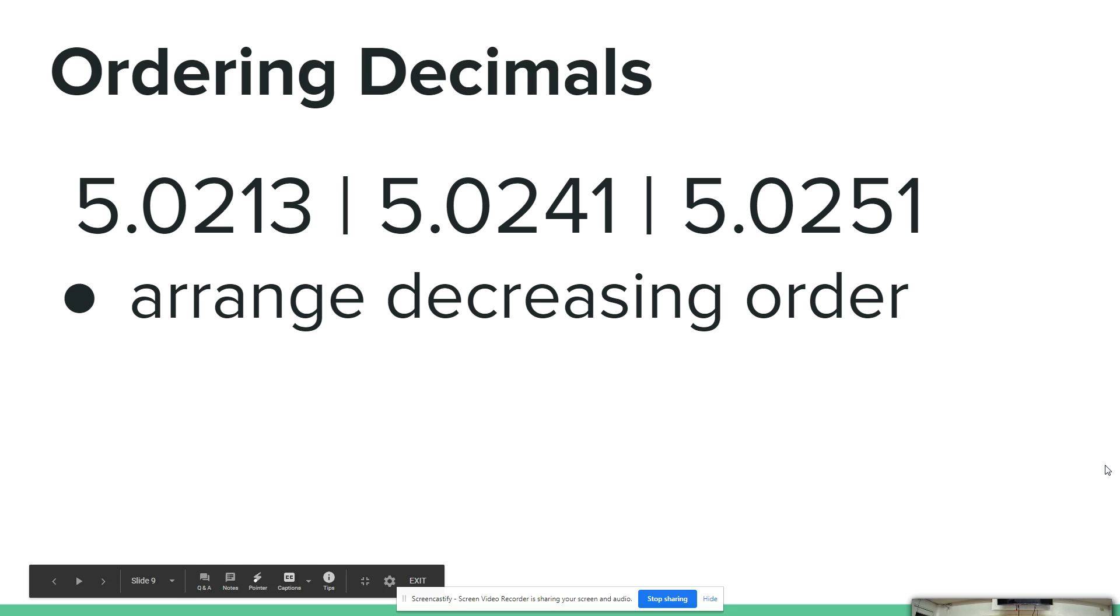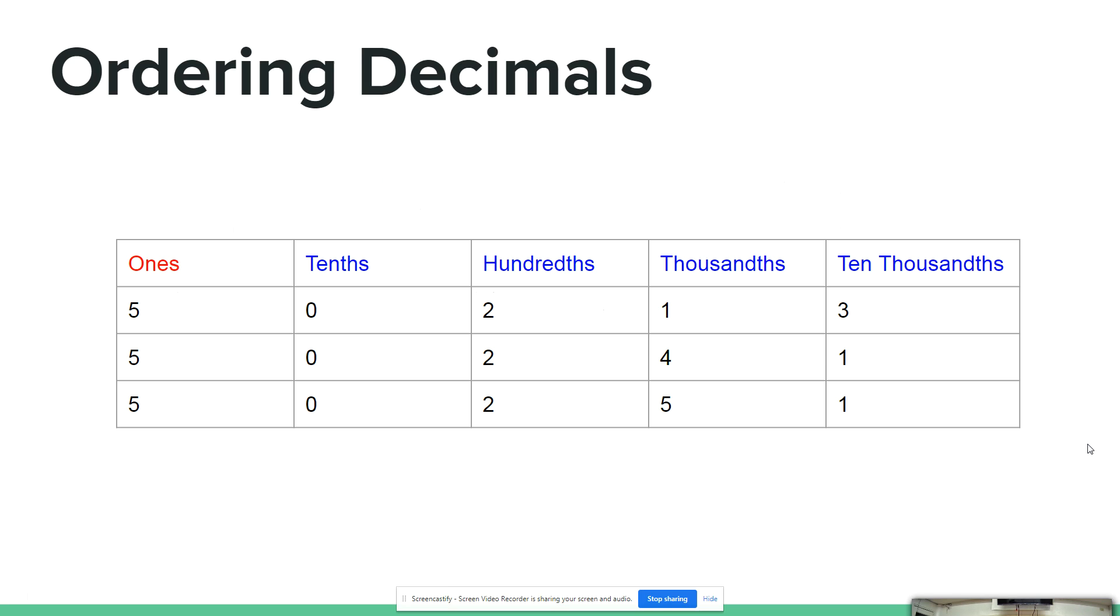Next is arranging decimals in decreasing order. It means from the highest value going to the smallest value. We will do the same procedure of writing them on a table.